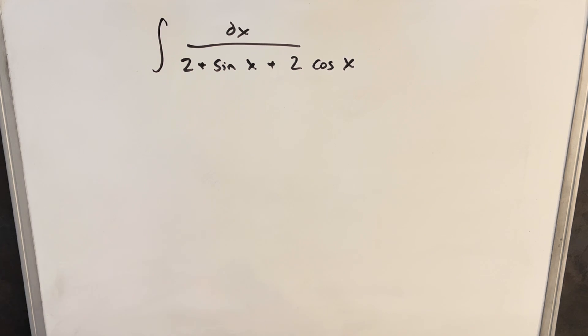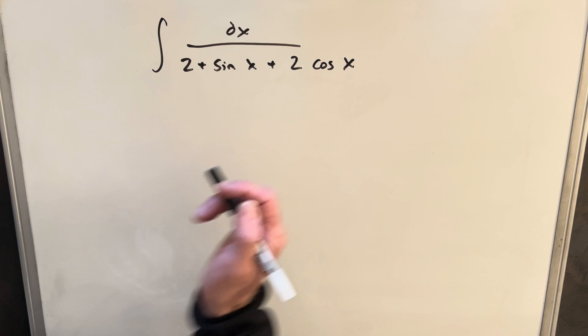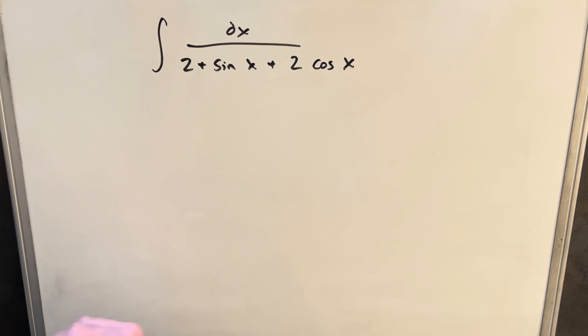Hey, we have this difficult-looking integral on the board. We have the integral of dx over 2 plus sine x plus 2 cosine x. If you were able to solve this using trig identities or some other method, let me know in the comments, I'd be interested. But I didn't look into that.